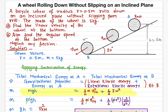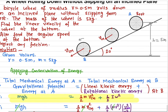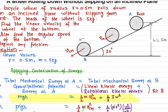In order to calculate, what we're going to do is apply the conservation of energy. At the top point, it has only one kind of energy, that is the gravitational potential energy.